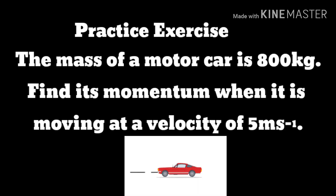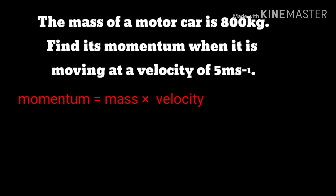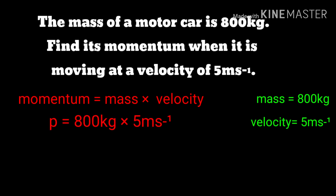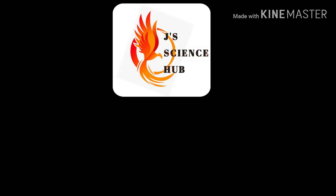Let's do a practice exercise to check whether we understand the formula and concept of momentum. A motor car has a mass of 800 kg and is moving with a velocity of 5 m·s⁻¹. Find its momentum. First, write the formula: momentum = mass × velocity. The data given is: mass = 800 kg, velocity = 5 m·s⁻¹. Check the units and substitute into the formula. When we multiply these values we get 4000 kg·m·s⁻¹. That is the answer.